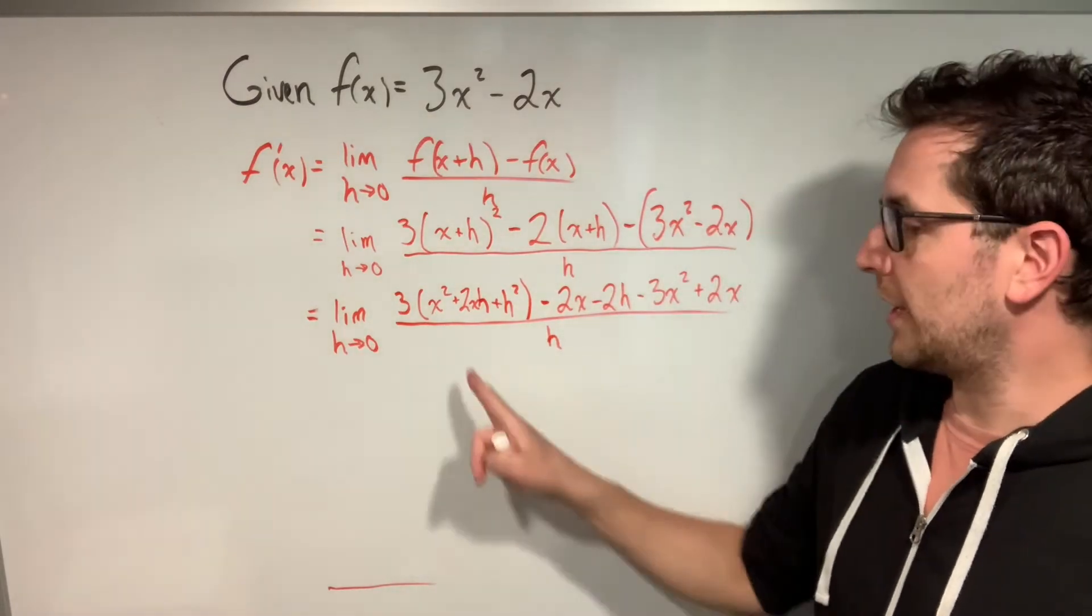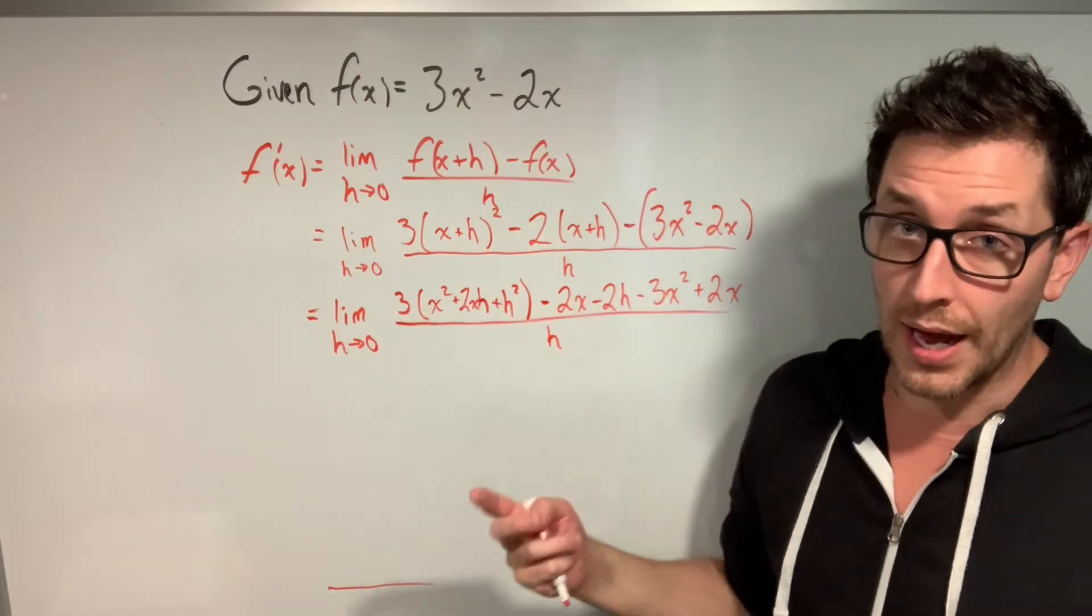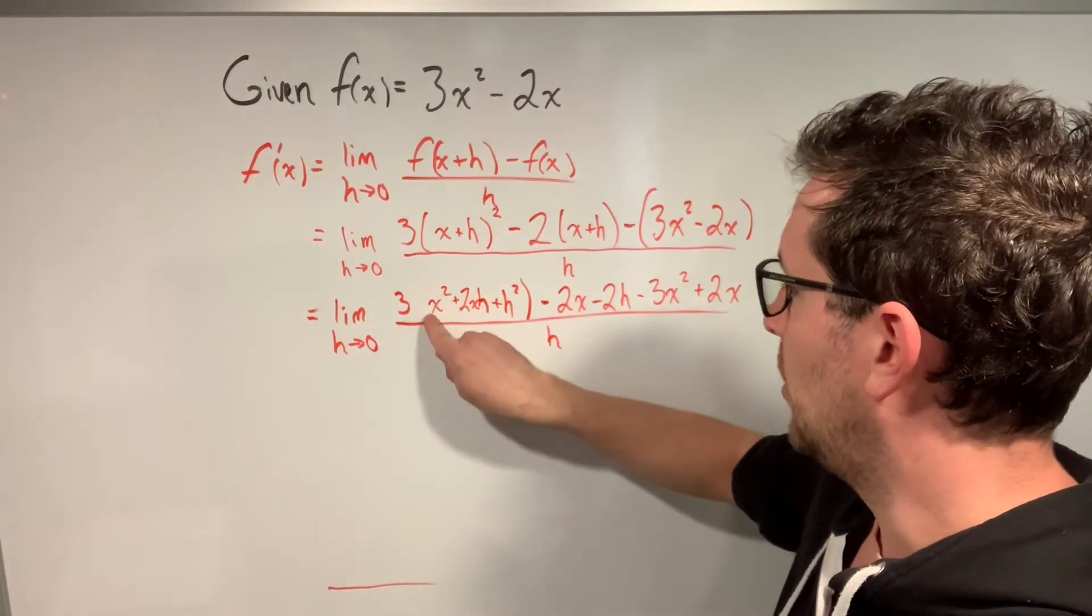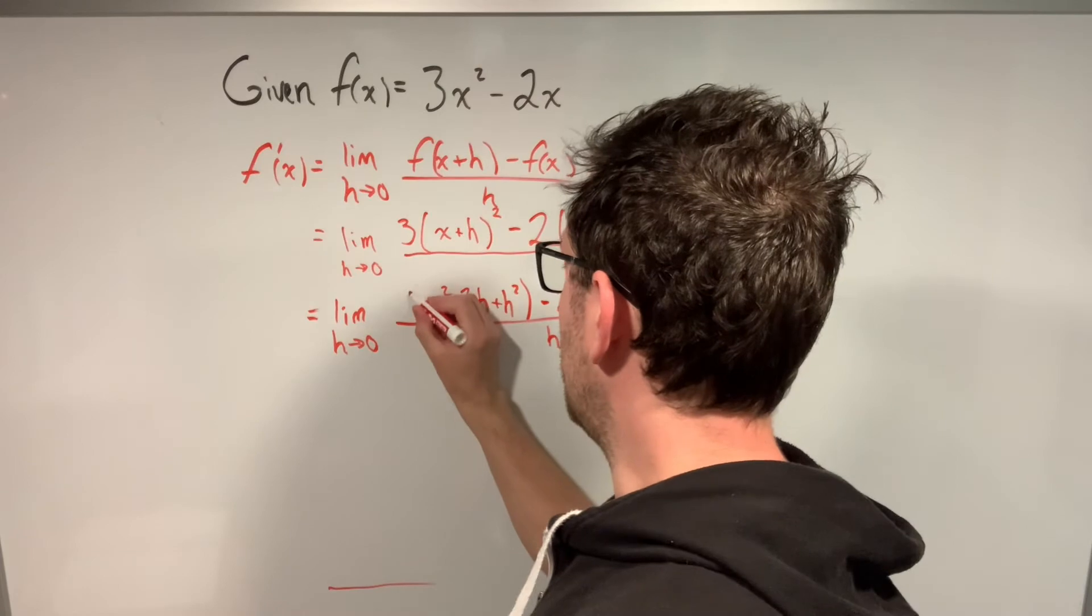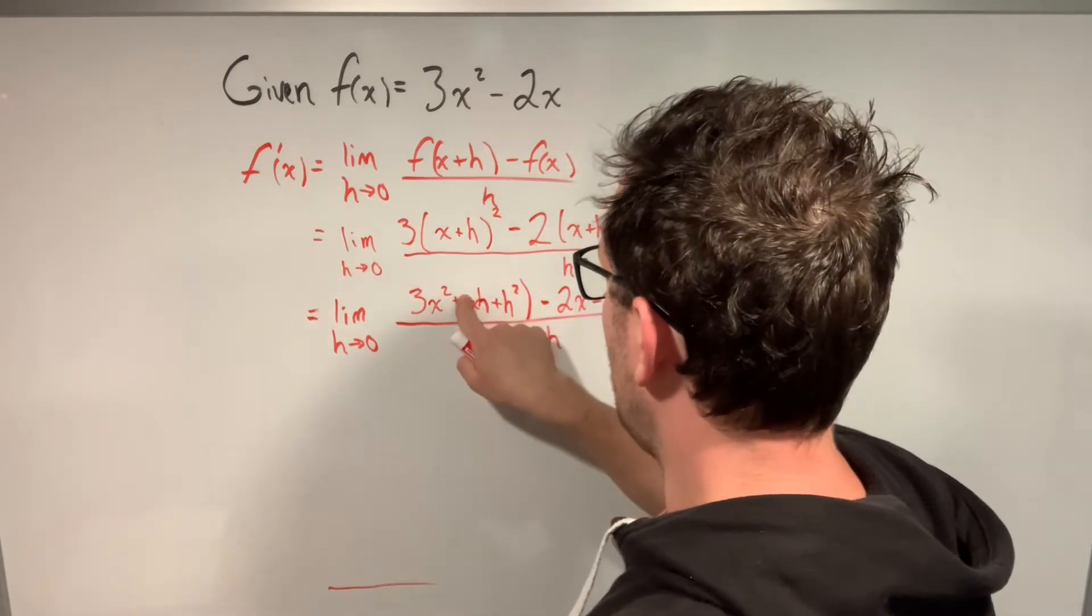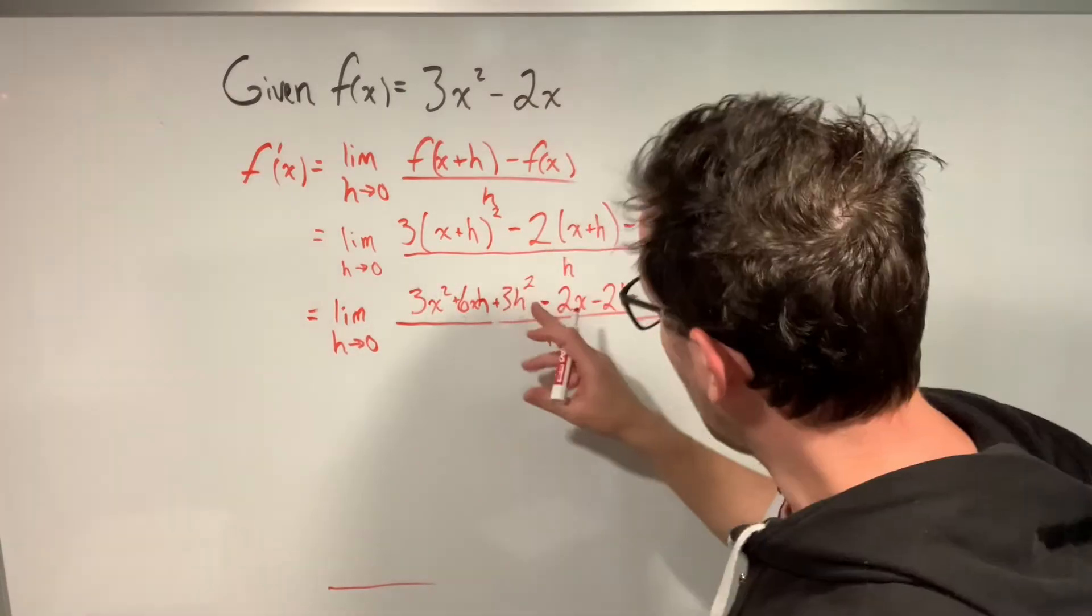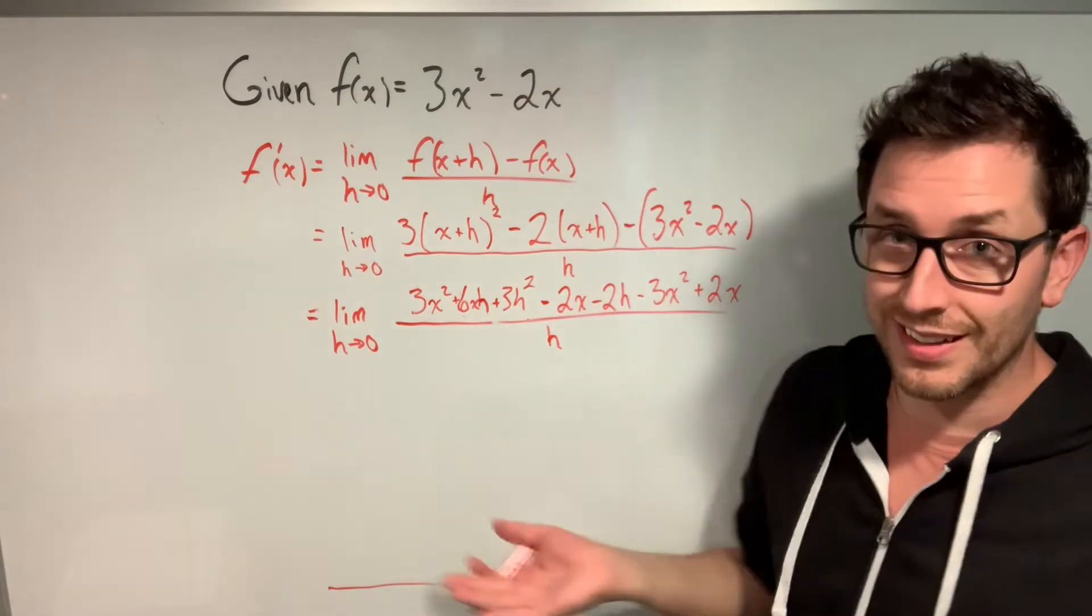Now I still have a little piece that I can simplify here, which is this 3 on the outside of the brackets. I'm going to distribute that 3 into the brackets. And because I'm on a whiteboard, I'm not going to write out another line. I'm just going to kind of tinker with what I have here. If I distribute that 3, I'm going to get 3 times x², 3 times 2xh, which should be 6xh plus 3h². And so you can see I've now removed all the brackets and I'm ready to start collecting like terms.